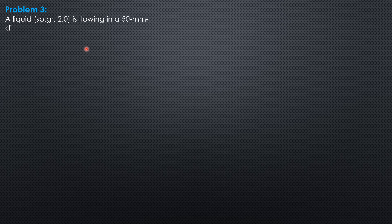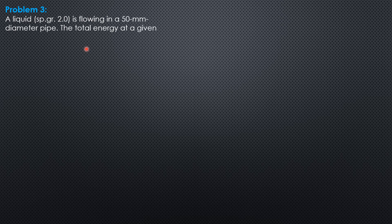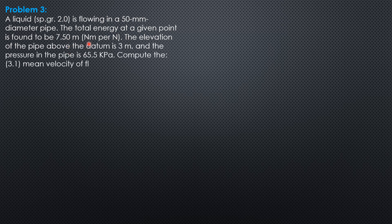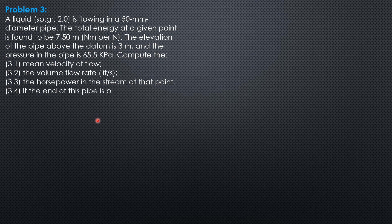Here's the problem. A liquid of specific gravity 2.0 is flowing in a 50 mm diameter pipe. The total energy at a given point is found to be 7.5 meters (newton-meters per newton). The elevation of the pipe above the datum is 3 meters and the pressure in the pipe is 65.5 kilopascals.